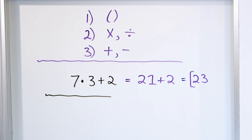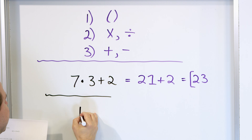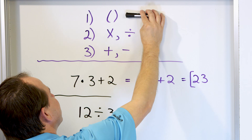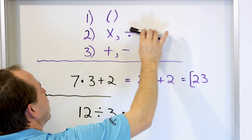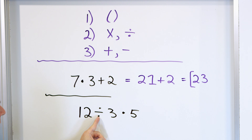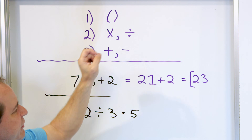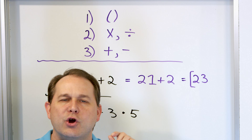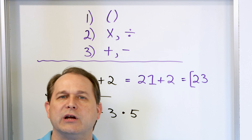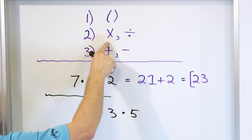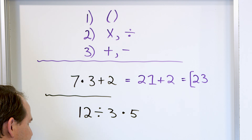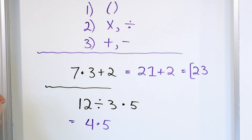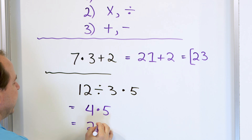Next problem. Now that we have the introduction out of the way, conquering the problems is actually pretty fun and easy. Let's take a look at 12 divided by 3, then multiplied by 5. First step: we always try to do parentheses first, but we don't have any. Next, we go to multiplication and division. We have a division and a multiplication — both are at the same priority level. When you have multiplication and division on the same level, you just do it like reading a book, left to right. So we do 12 divided by 3 first: that's 4. Then 4 times 5 is 20, and this is the final answer.